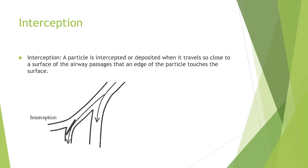Interception: a particle is intercepted or deposited when it travels so close to a surface of the airway that an edge of the particle touches the surface, so it doesn't follow the airway and just goes into the side. This method of deposition is most important for fibers such as asbestos. The fiber length determines where the particle will be intercepted — for example, fibers with a diameter of one micrometer and a length of 200 micrometers would be deposited in the bronchial tree. Using what's called the mucociliary escalator, your body will pull the particles back up and out of your mouth.